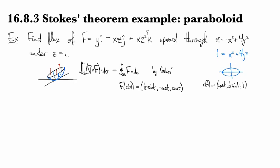Okay, and of course, our dc is going to be -sin t, 1/2 cos t, zero dt.